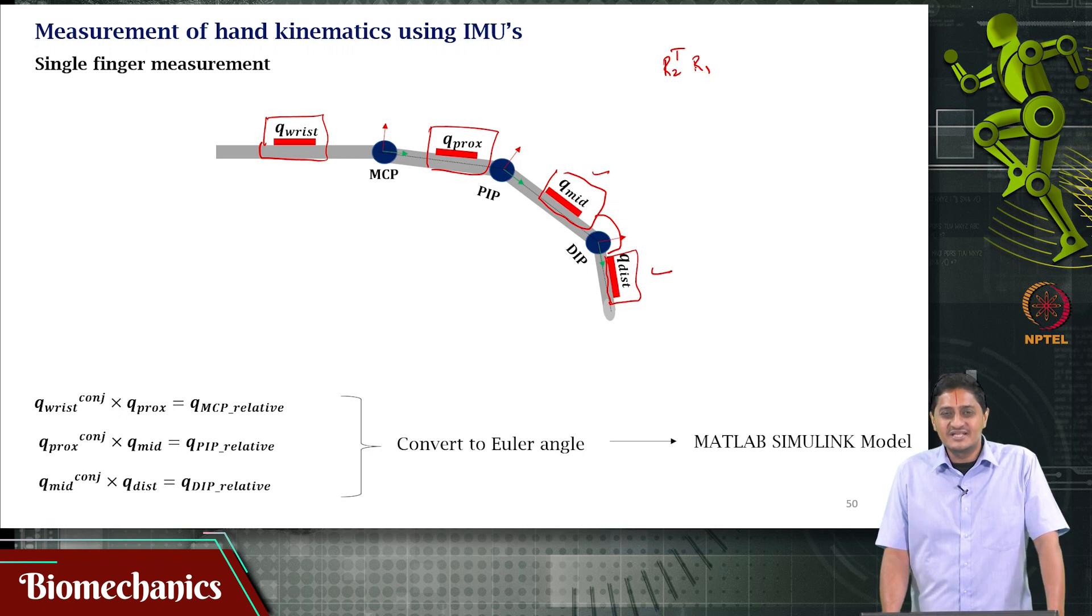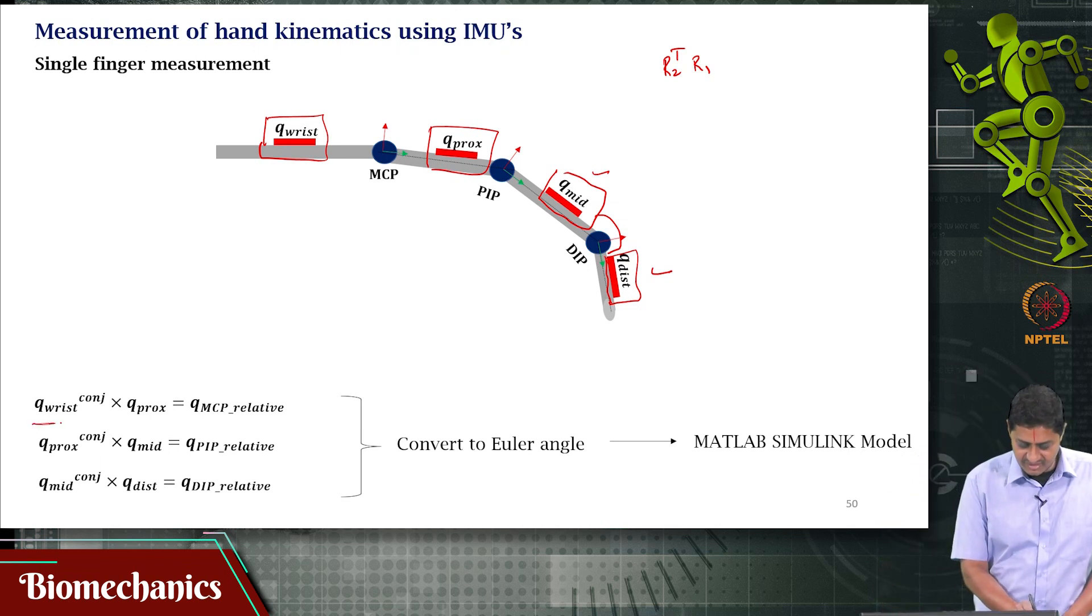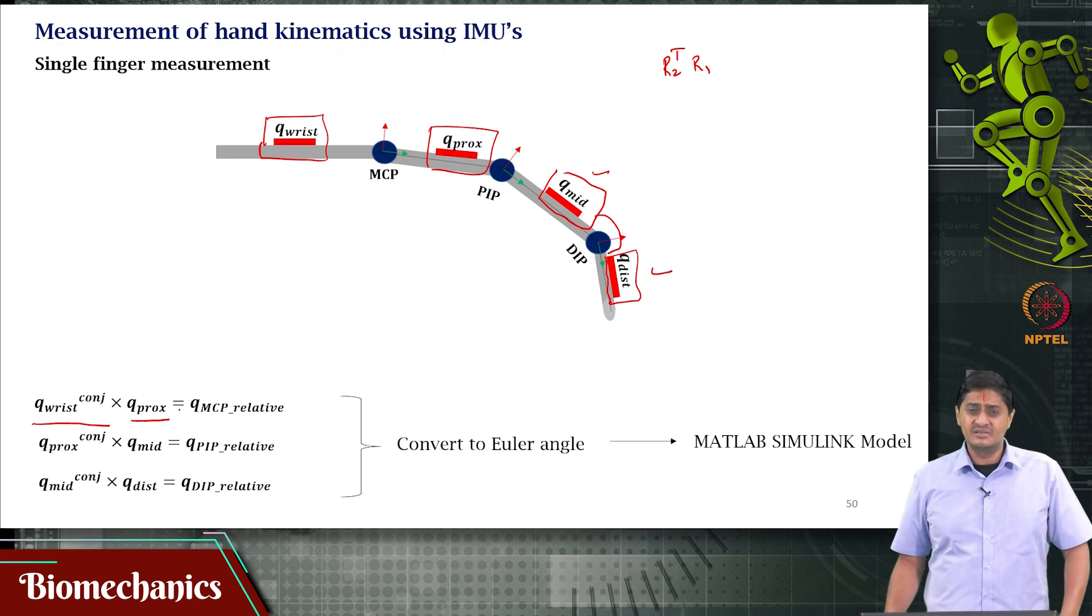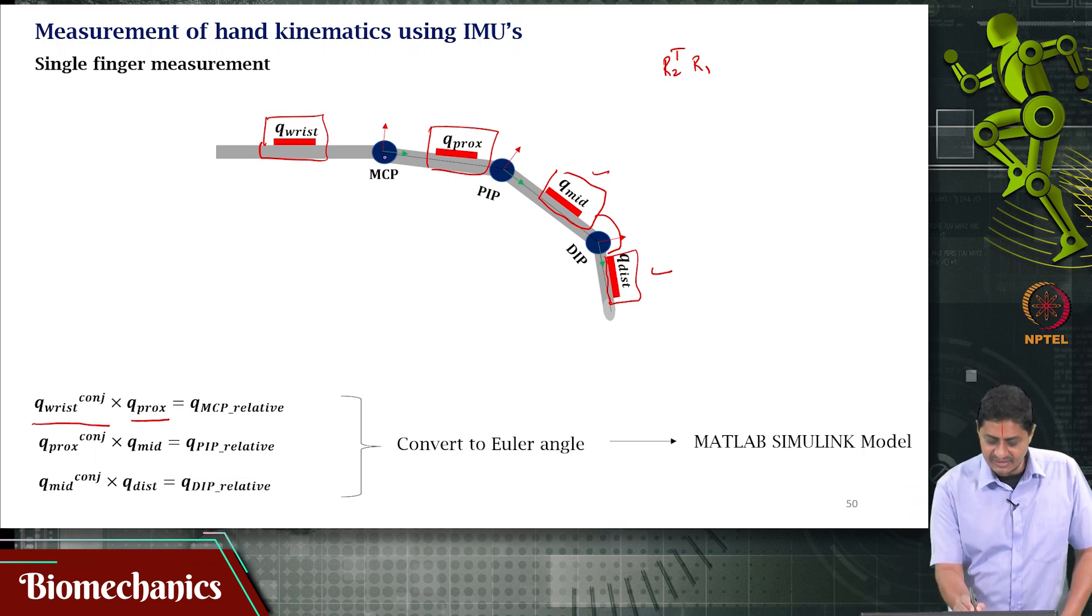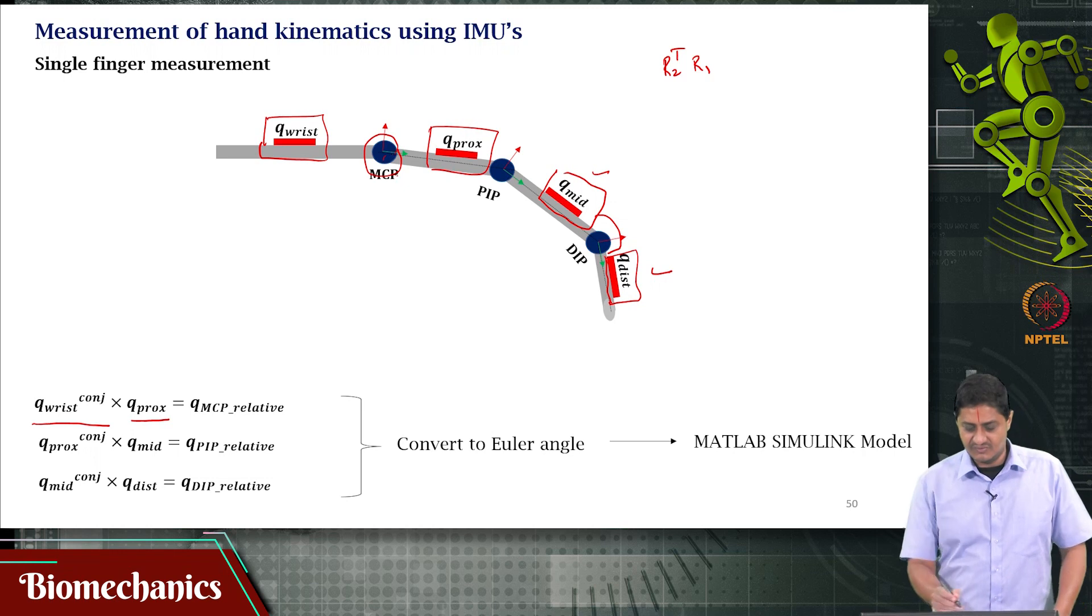How do we do it in quaternions? You find the complex conjugate of one quaternion and multiply it with the other quaternion - we saw this in one of the previous videos. Review that information. With that, I can find the relative orientation between two segments. I'm finding the complex conjugate of the wrist quaternion and multiplying by the proximal segment quaternion to get the relative orientation at this joint.